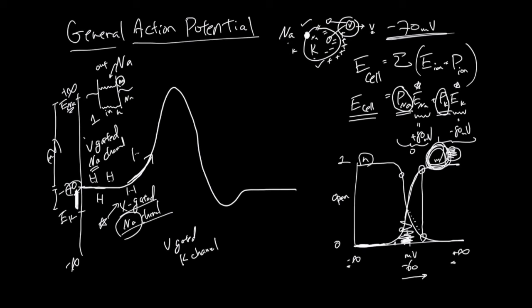This leads to M quickly opening while H is slow to close. Around this rising phase, M is open and H is still open — slow to close. M is even more open, H is still trying to close but slow. Eventually, you will get to a point where M is very open but H is now completely closed. This is why at the peak there is no more Na coming into the cell. And why would the voltage go down from there? This is because of the third player: the voltage-gated K channel.